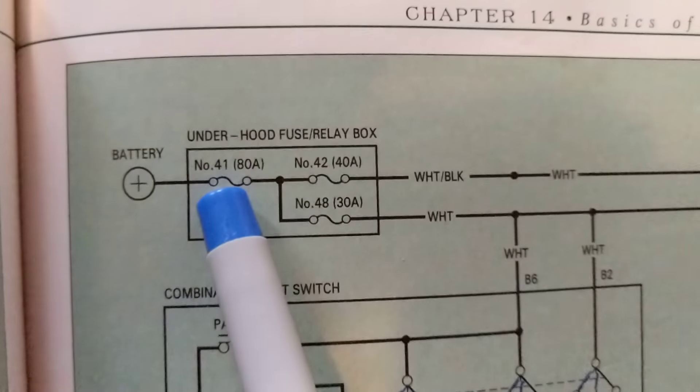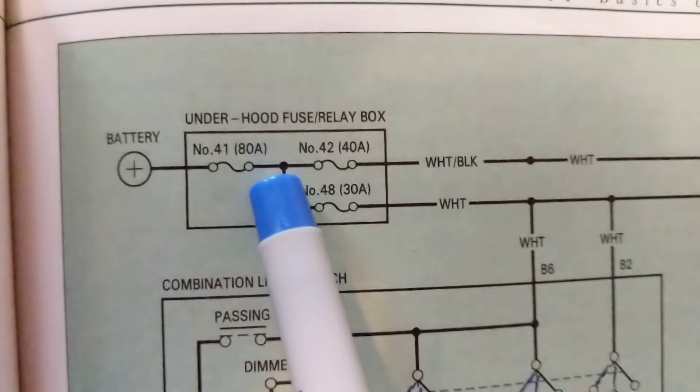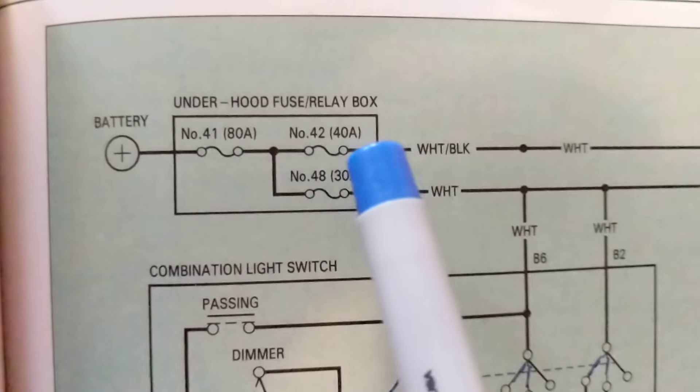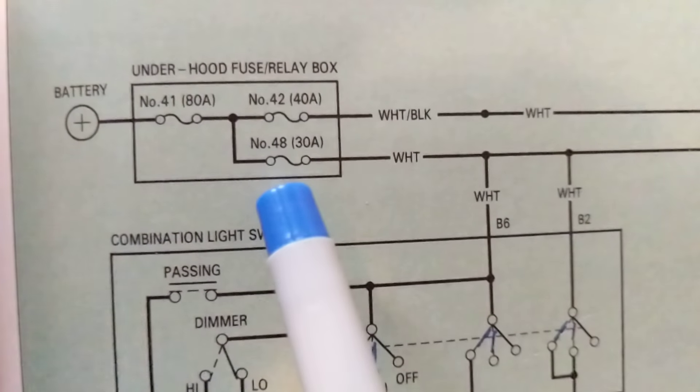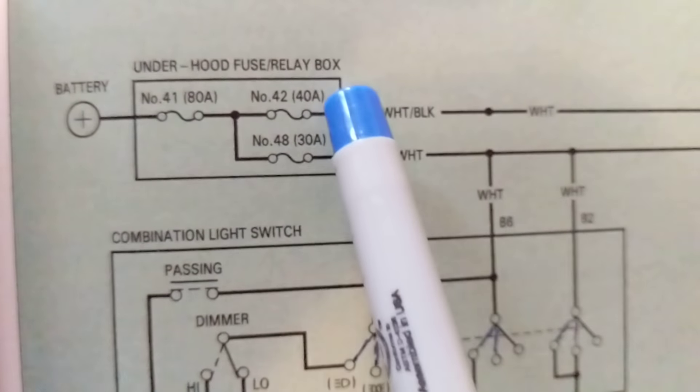Start here number 41 fuse, 80 amps. So one side of the battery goes to one side of the fuse. Other side of the fuse goes to two other fuses, that number of the other fuse is number 42 and another fuse number 48. This is 40 amps, this is 30 amp fuse.